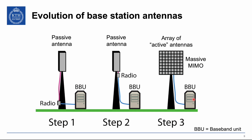Base station antennas have evolved significantly over recent decades. Initially, large antennas with fixed directivity were used, with radio signals generated at the base of the tower. Later, radio units became small enough to mount next to the antenna, though antennas remained passive with broad fixed coverage. Nowadays in 5G and beyond, arrays of active antennas are used — many radios and small antennas in a large panel — allowing signals to be directed exactly where users are, enabling much stronger antenna gain.